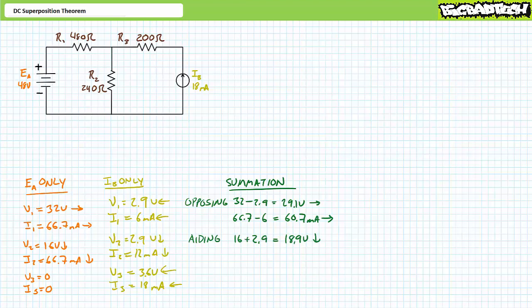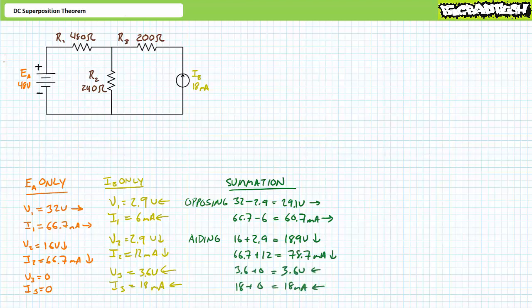The voltage source induces 16 volts positive to negative top to bottom across R2, and the current source induces 2.9 volts positive to negative top to bottom across R2 as well. When superimposed, R2 ultimately experiences an 18.9 volt drop positive to negative top to bottom — the effects of both sources are aiding, so the final voltage is increased. Similarly, 66.7 milliamps plus 12 milliamps both top to bottom gives R2 experiencing 78.7 milliamps top to bottom. Lastly, R3 experiences voltage and current only from the current source: a 3.6 volt drop positive to negative right to left, and 18 milliamps right to left. With final voltage and current values, one could now calculate non-linear properties like power.